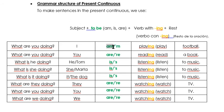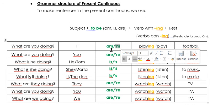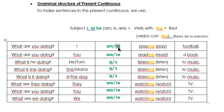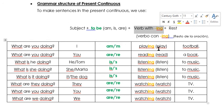Pueden utilizar cualquiera de las dos — la forma larga o la forma contraída. For example: I am, or I'm. You are, or you're. He is, or he's. She is, or she's. It is, or it's. They are, or they're. You are, or you're. We are, or we're. Following the verb to be, we have to use the main verb with -ing. Al verbo principal le vamos a agregar -ing.